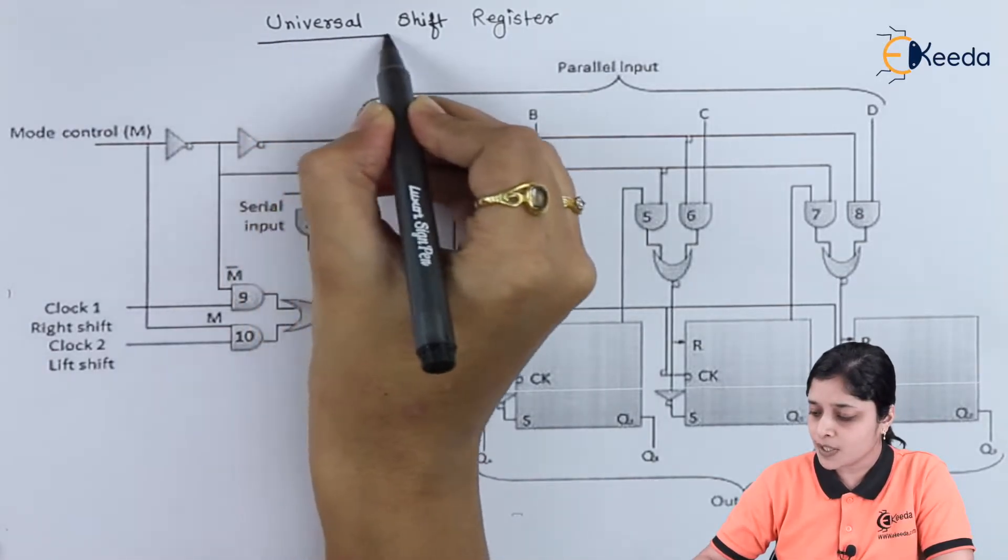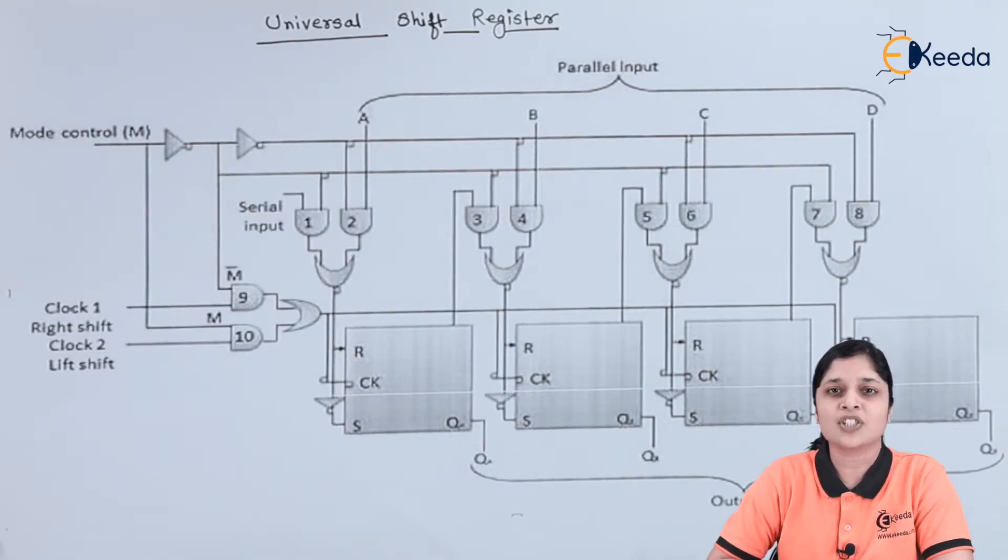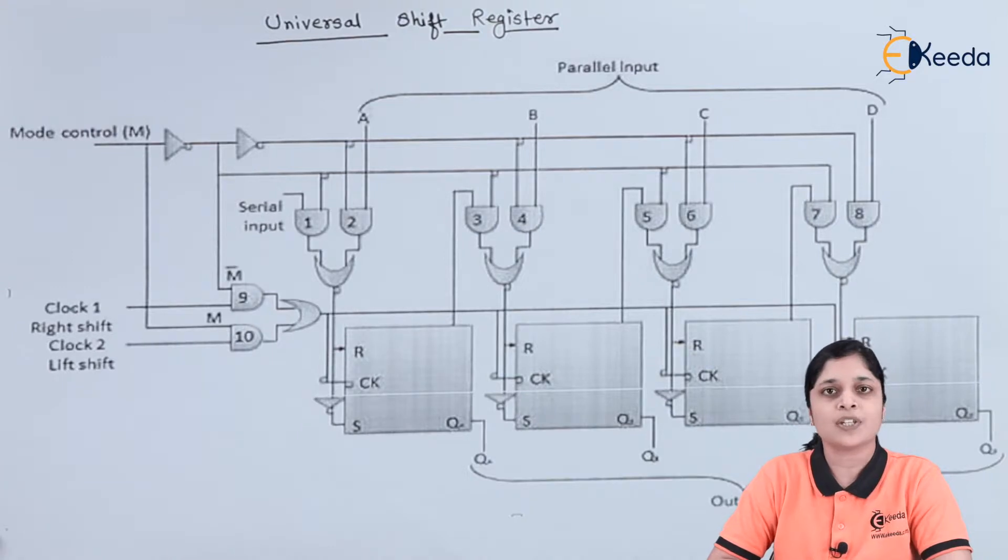First of all, what is the meaning of universal shift register? The register which can shift data in both directions, that is right shift and left shift, and it will also load the data parallelly, then the register is called the universal shift register.